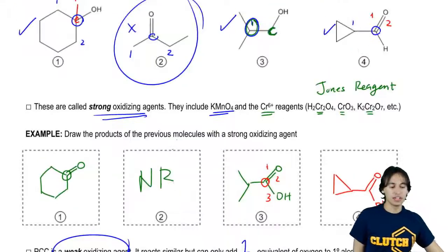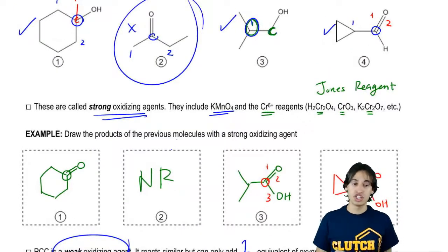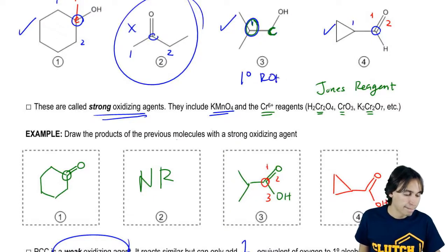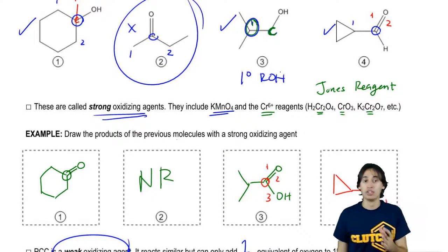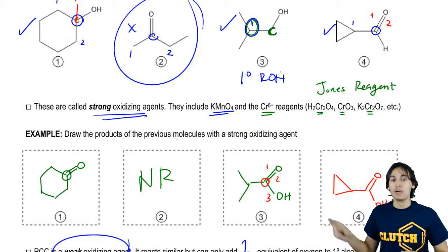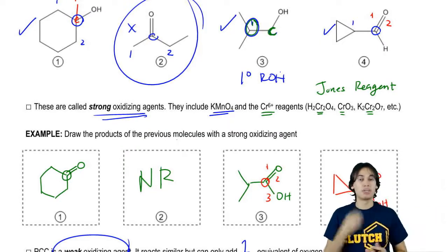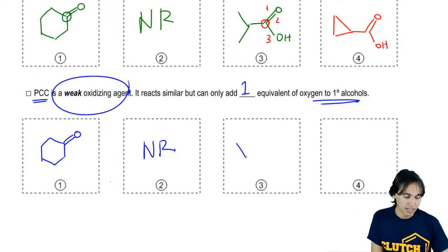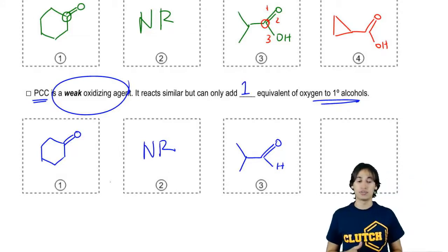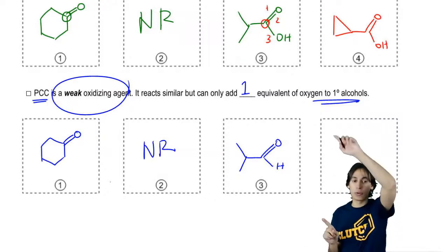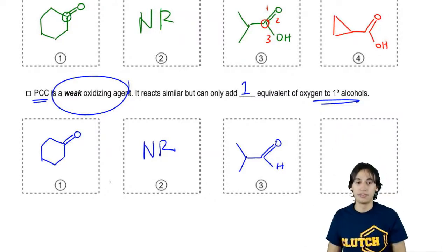Would it be able to oxidize number three? Yes, it would. But this is our special situation. Notice that I have a primary alcohol. Whenever you have a primary alcohol, what that means is that for a strong oxidizing agent, I would have taken it to a carboxylic acid like this. But for a weak oxidizing agent like PCC, I'm going to go to an aldehyde instead. So that means that I'm actually going to draw this thing like this with an H instead of an OH. That's the biggest difference here. That's actually the only major difference that we have with PCC is that instead of getting carboxylic acid, we get an aldehyde.